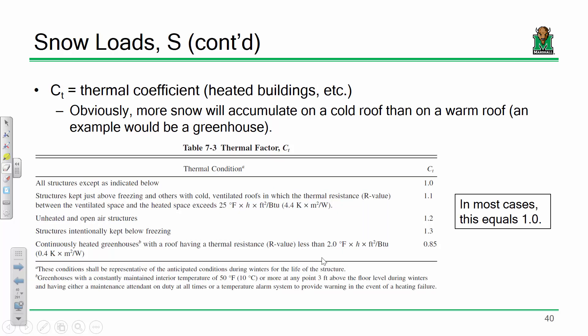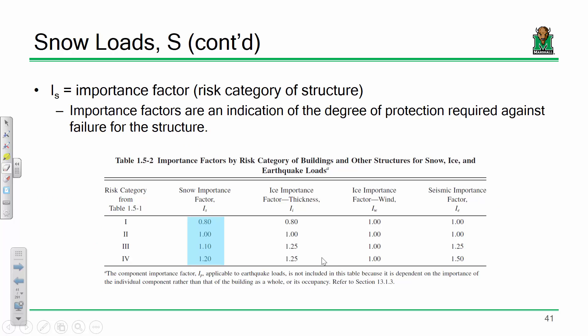The thermal coefficient Ct is 1 about 99 times out of 100. But if you have a heated roof structure — like a greenhouse — heat melts snow, which would reduce your snow load, so Ct accounts for that.